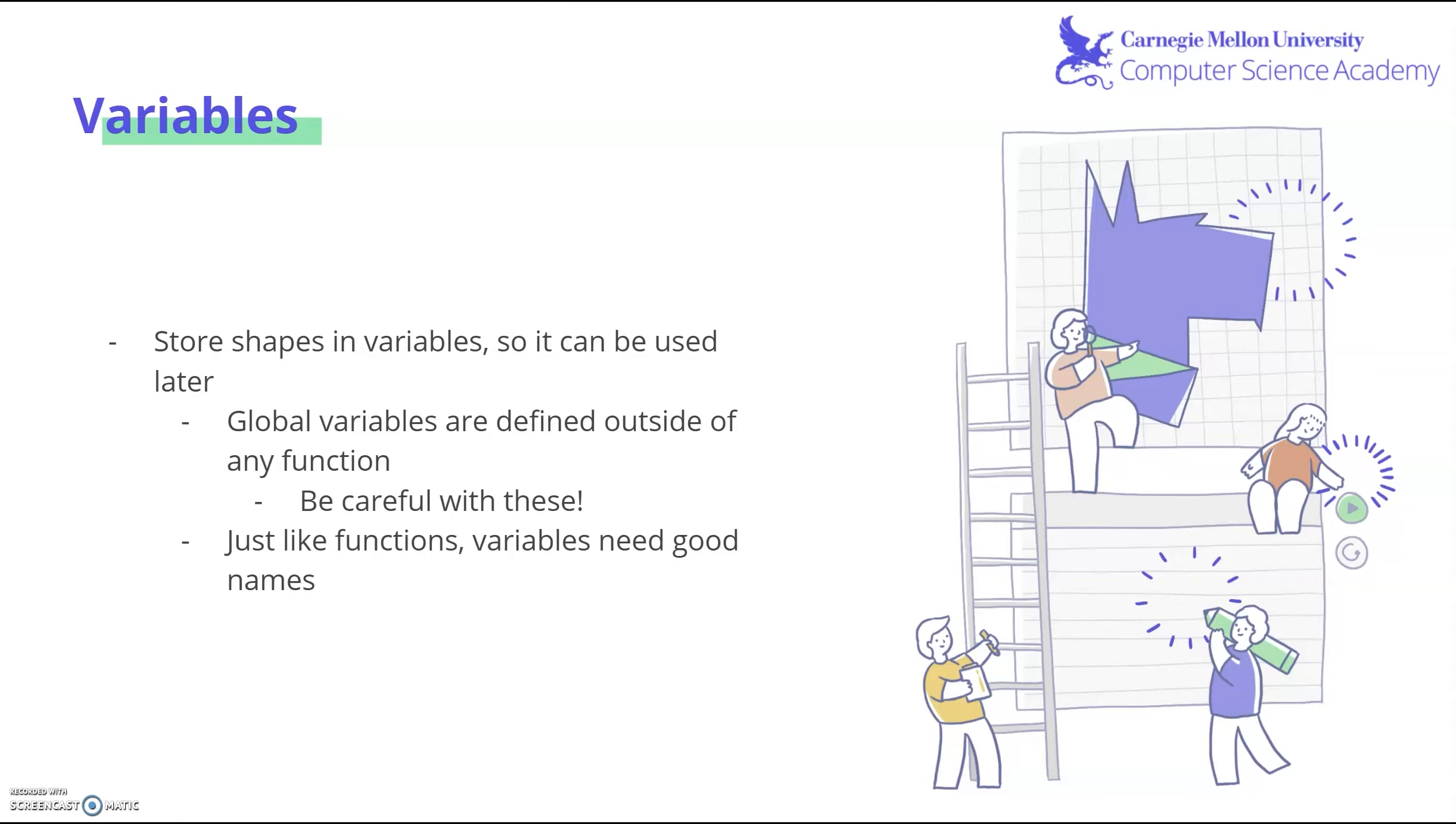It's also worth noting that there are things called global variables, which are defined outside of any function. Be very careful with these, because if any of your function goes in to modify that variable, say changing the radius of a circle, if you try to call on that shape later on, it will be modified and no longer the same variable you originally defined.